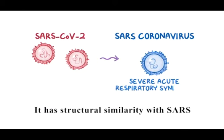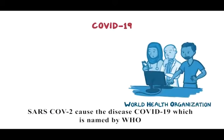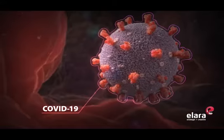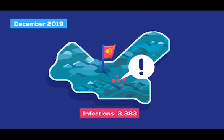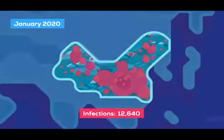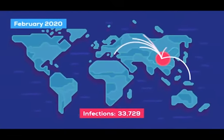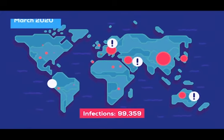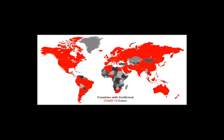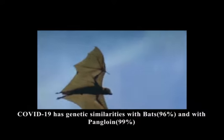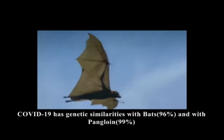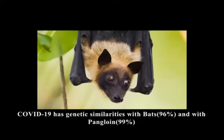This novel coronavirus has structural similarity to the SARS virus. WHO named the disease caused by SARS-CoV-2 as COVID-19. The outbreak of COVID-19 began in December 2019, first emerging in Wuhan, China. It was declared an outbreak by WHO in February 2020 and has since spread to other countries.